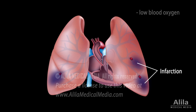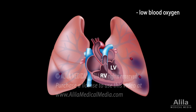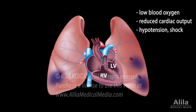Impaired lung function leads to low oxygen levels in the blood. Obstruction can also increase pulmonary resistance, making it harder for the right ventricle of the heart to pump blood to the lungs. As a result, the right ventricle dilates, bulging into the left ventricle, reducing left ventricular filling, and subsequently lowering cardiac output, which may lead to arterial hypotension and cardiogenic shock.